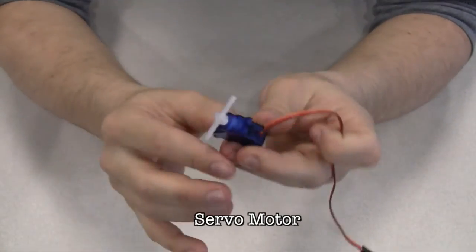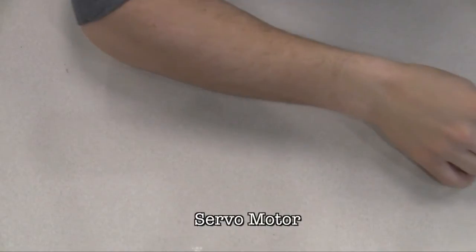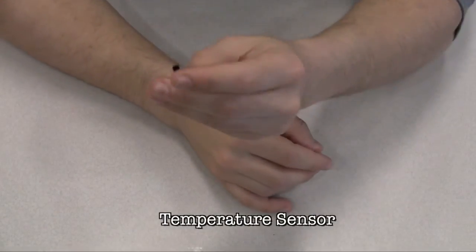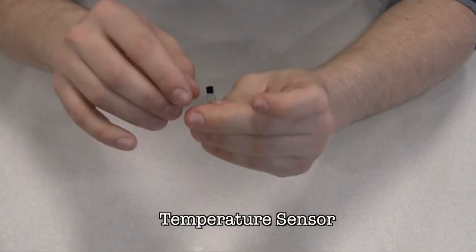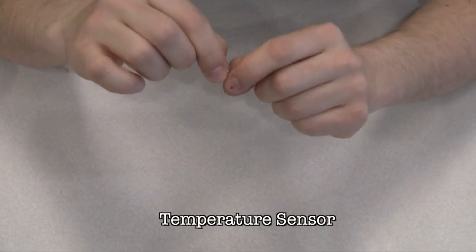A temperature sensor changes its voltage output depending on the temperature of the component. The outside legs connect to power and ground, and the voltage in the center pin changes as it gets warmer or cooler.